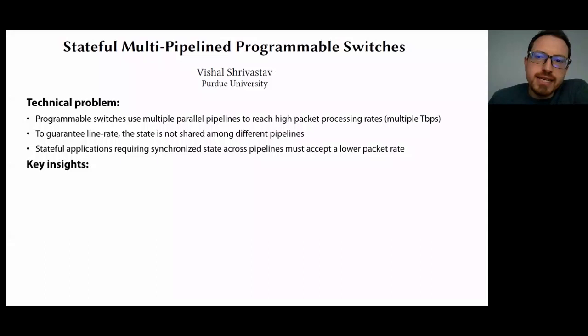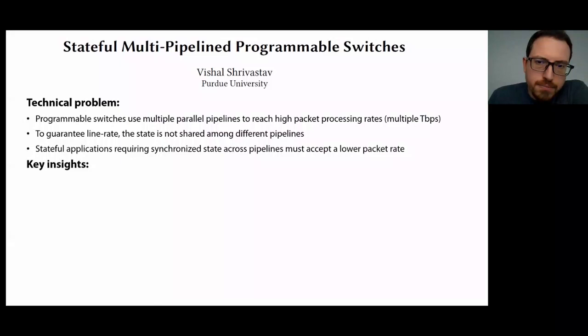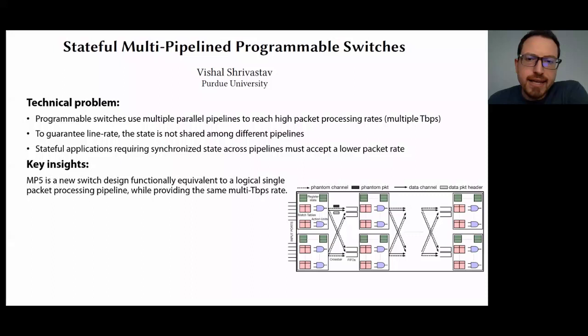Stateful applications that keep state in pipe-local memory and want the state to be synchronized among all switch pipes need either to limit traffic to a single pipe or use recirculation — and both options limit the available bandwidth that the applications can use. This paper describes a new switching chip design that extends the multi-pipeline PISA architecture to support sharing state across multiple pipes.